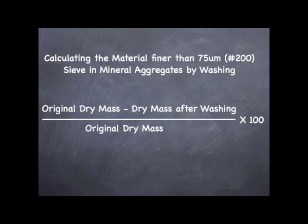Now that we have completed all of the physical aspects of our test, we can go ahead and do our calculation. We do this by taking the original dry mass of the sample and subtracting from it the mass of the sample after washing. We then divide this number by the original dry mass of the sample and multiply by 100. We will report all findings to the nearest 0.1%, unless the number is greater than 10%, in which case we will report to the nearest whole number.